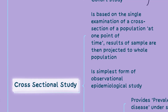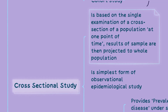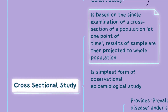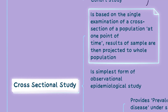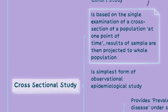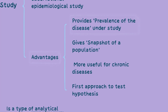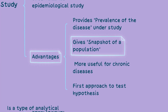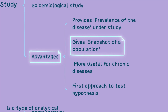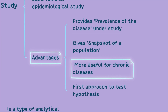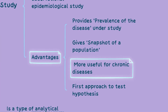Cross-sectional studies are simple observational studies that involve the examination of a representative sample of a population at a specific point in time. They provide information on the prevalence of the disease and offer a snapshot of the population's health status. Cross-sectional studies are particularly useful for studying chronic diseases.